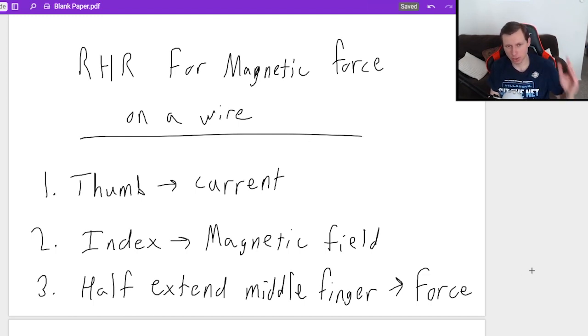Which, by the way, this is extremely similar to the other three-finger point method, the other physics gang sign method we did for magnetic point charges. However, the only thing you would change is, instead of current, it was the direction of velocity. That was the only difference between point charges and a wire, current in a wire. Everything else is the same.